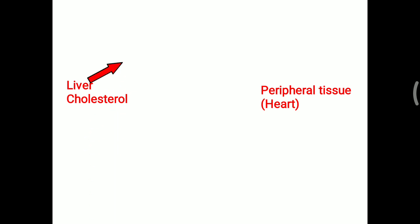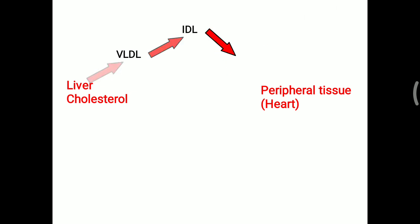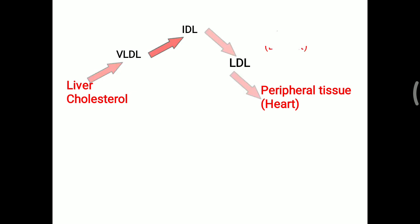In summary: liver cholesterol is initially secreted in the form of VLDL. When triacylglycerol is taken up by peripheral tissue, VLDL is converted into IDL. IDL then donates some triacylglycerol and is converted into LDL — low density lipoprotein. LDL is taken up by peripheral tissue and partly by the liver, but the majority goes to peripheral tissue. This represents transportation of cholesterol from liver to peripheral tissue — considered bad cholesterol, as it deposits cholesterol to the periphery, particularly dangerous for the heart.